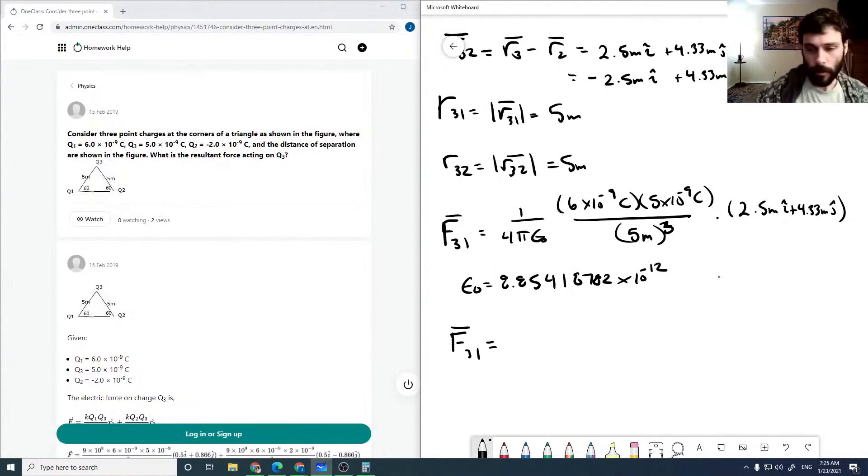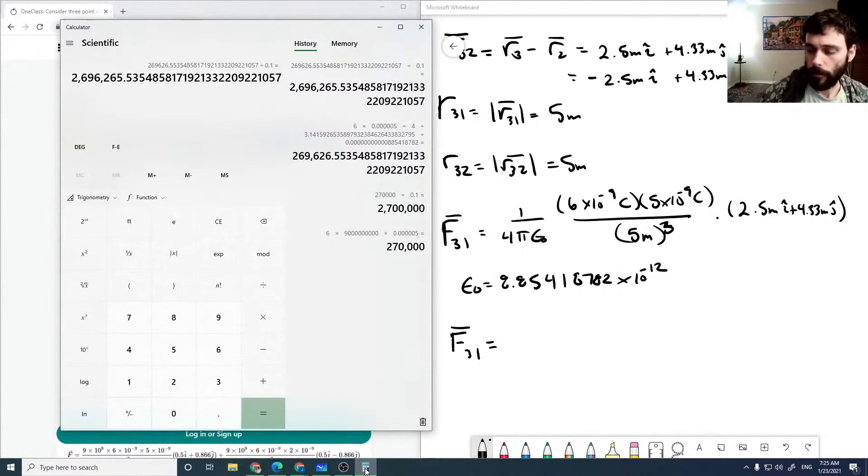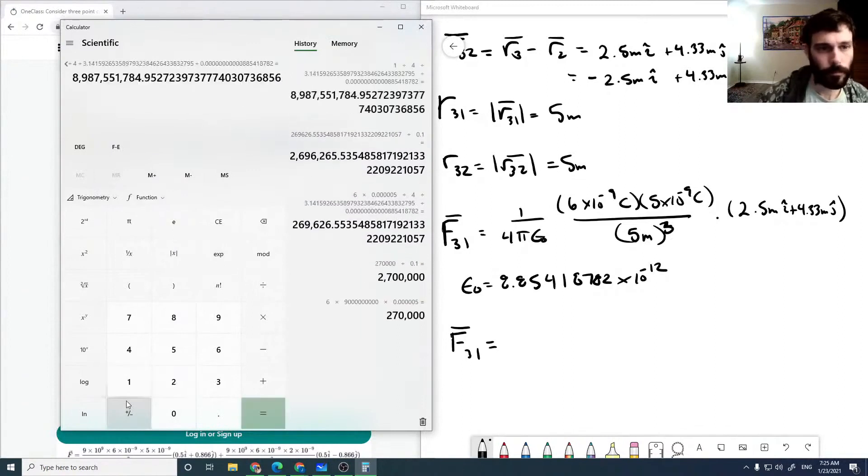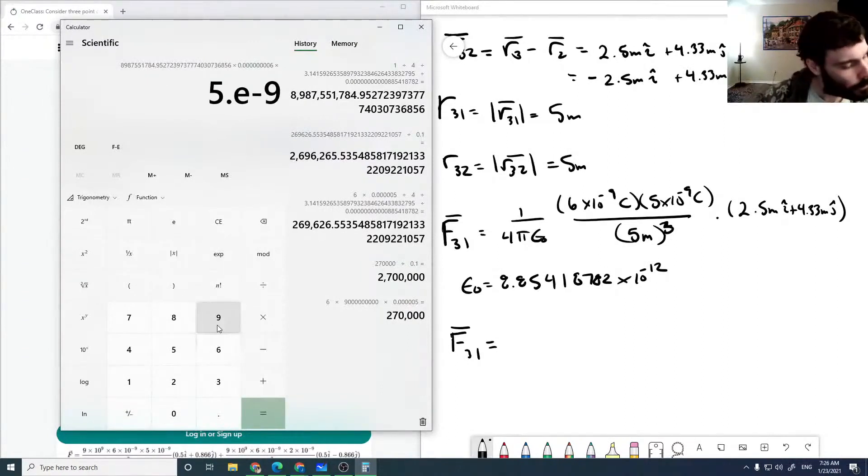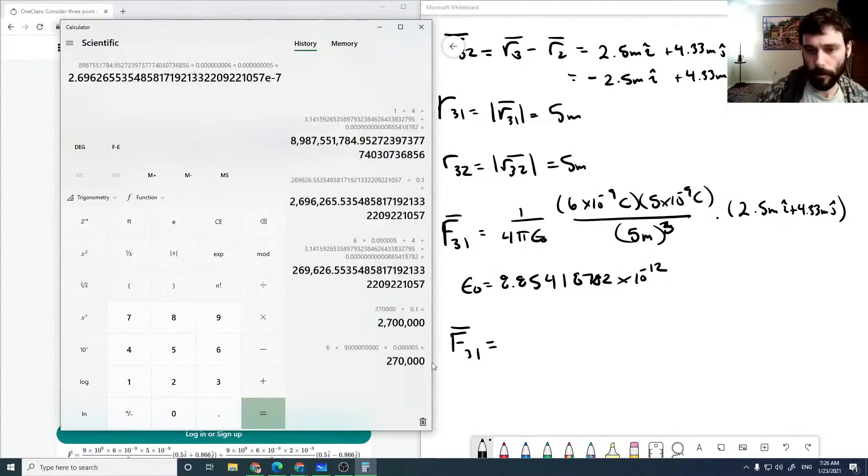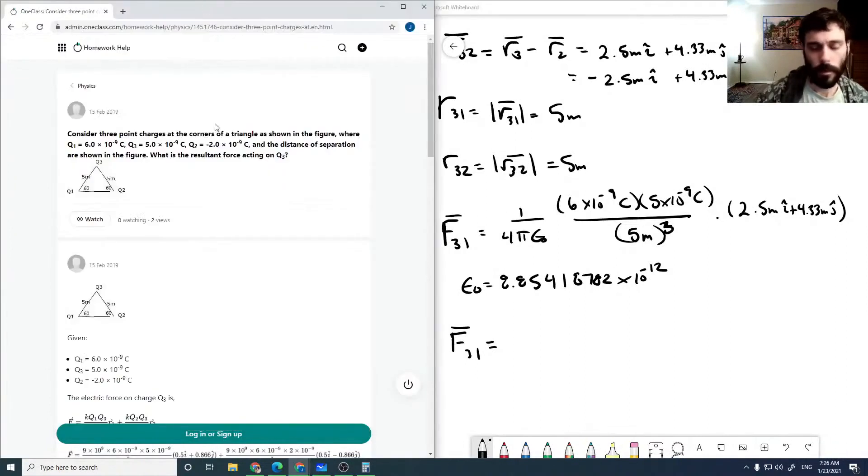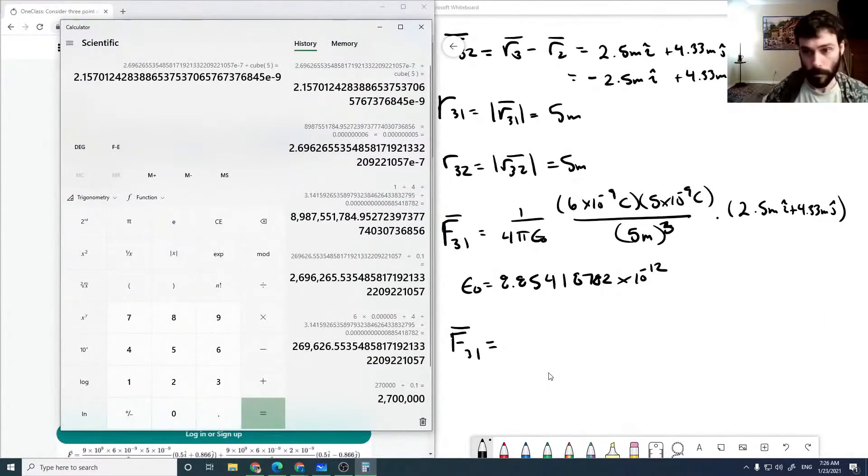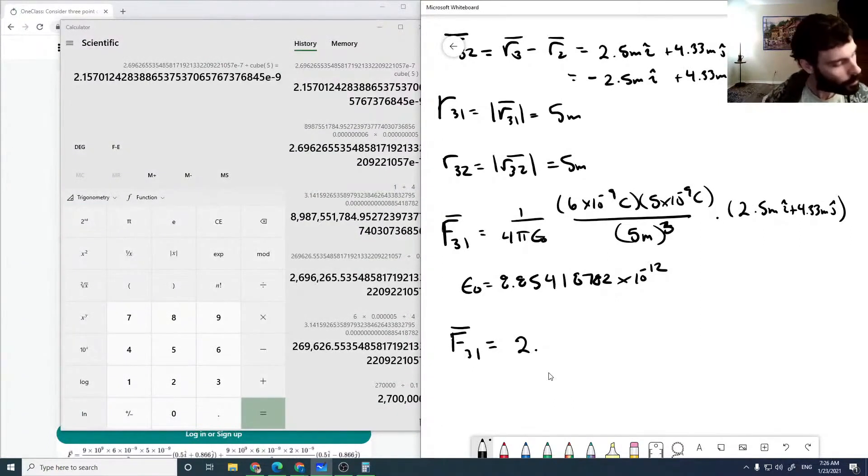I'm going to recalculate because I messed up on my units. 1 over 4 pi epsilon naught times 6 times 10 to the minus 9 times 5 times 10 to the minus 9, divided by 5 cubed. This should be 2.157 times 10 to the minus 9.